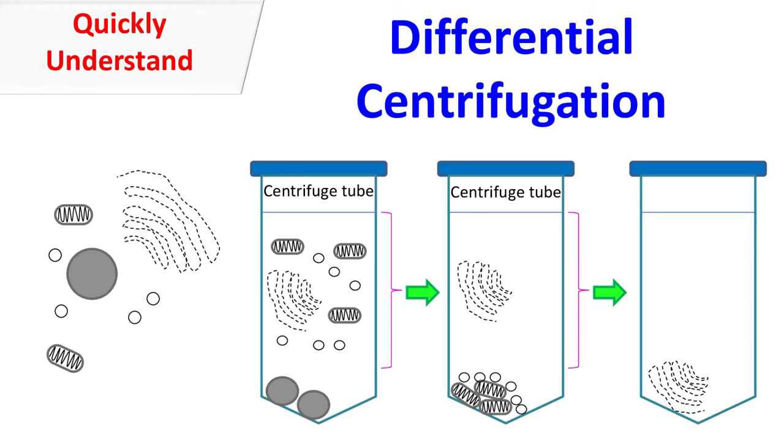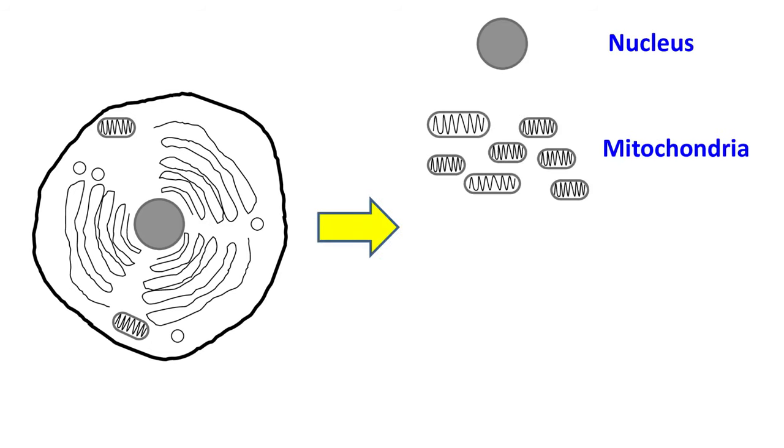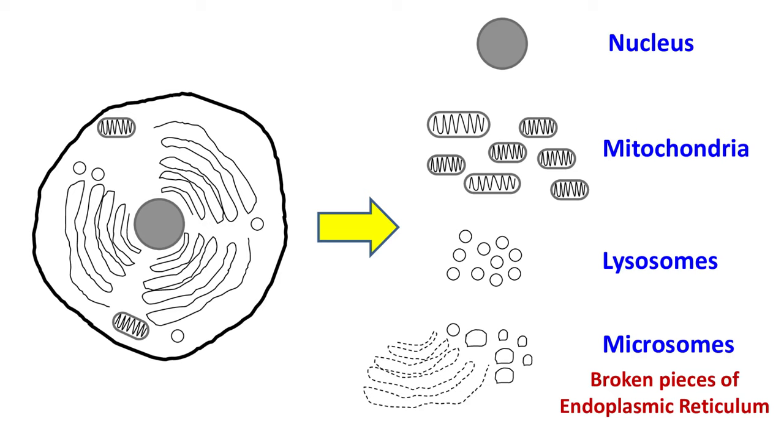Differential Centrifugation is a common biochemistry and cell biology technique used for the separation of cell organelles and subcellular particles based on the sedimentation profile.